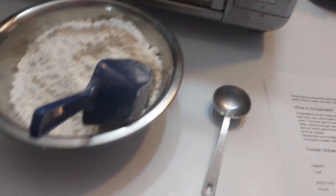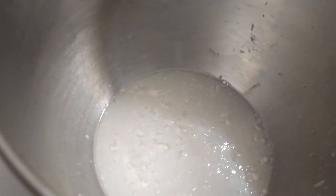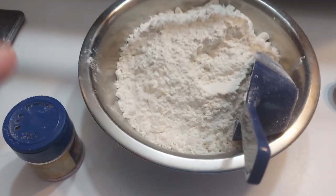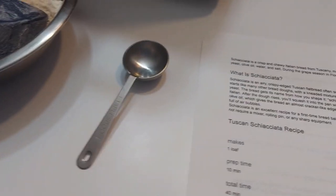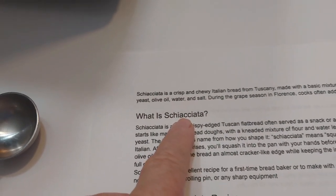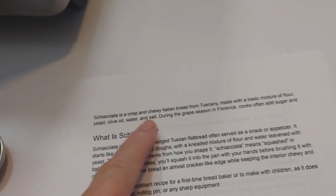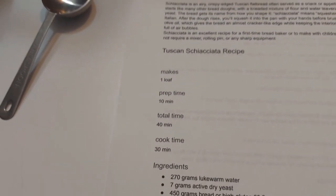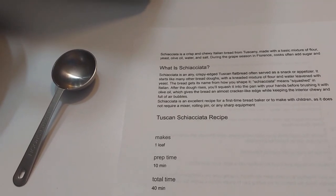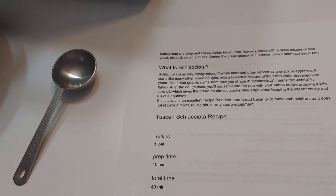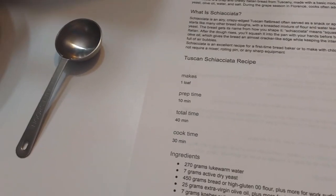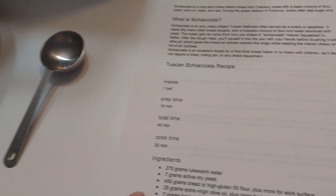All right, so today we're making a new type of bread. This is double O pizza flour, and it's what they're calling for. It's a crisp, chewy Italian bread from Tuscany. I have a video from back in March 2024 where we did a Tuscan sandwich bread that was divine.